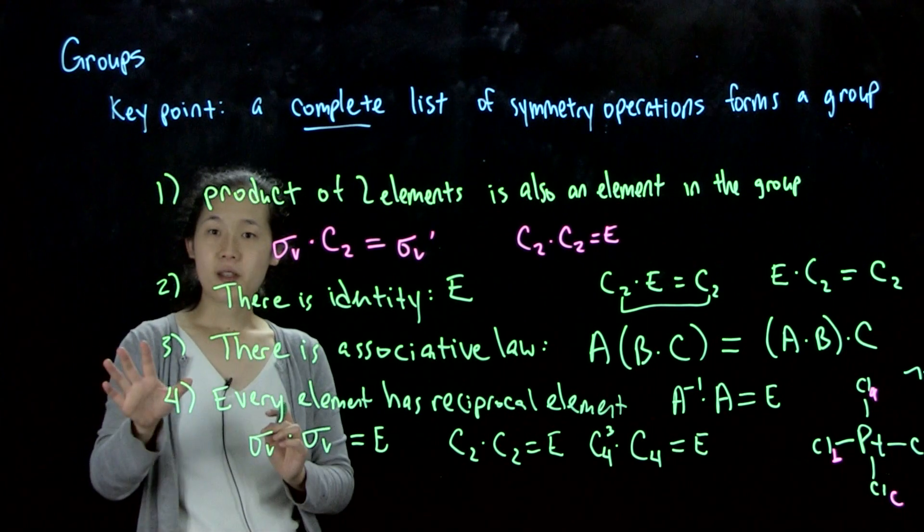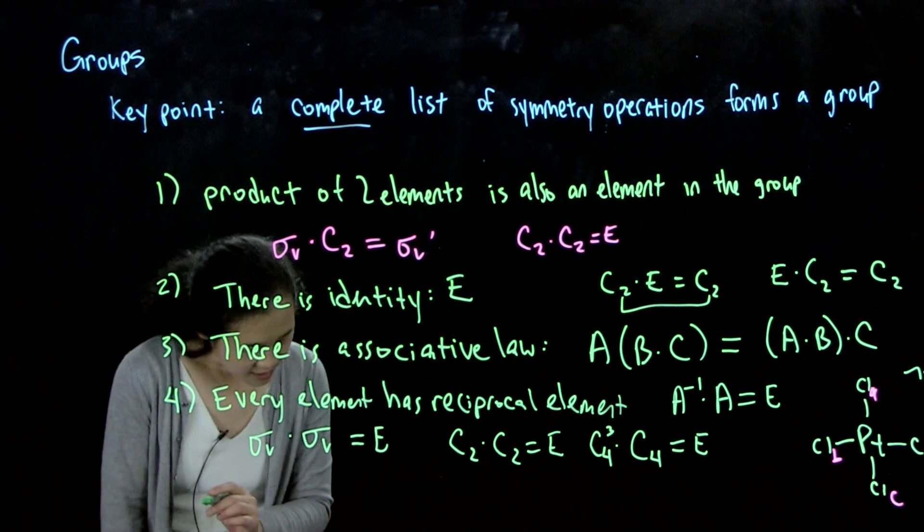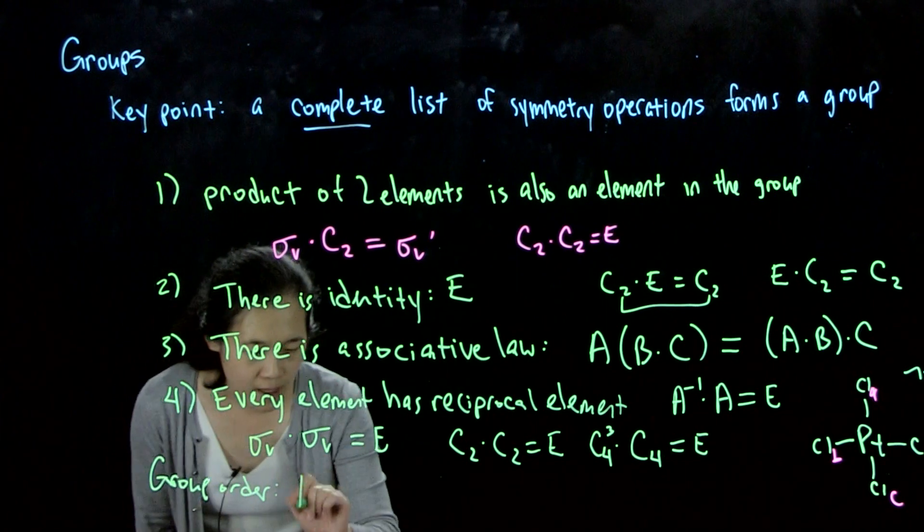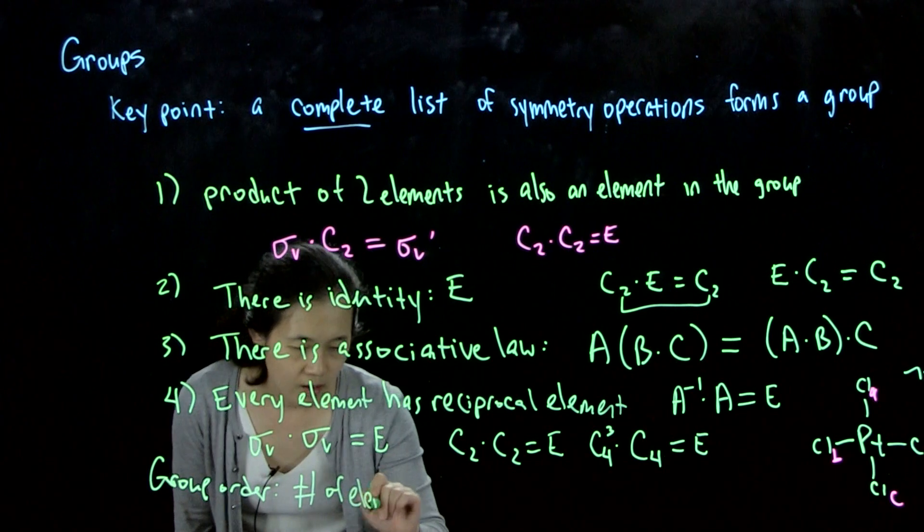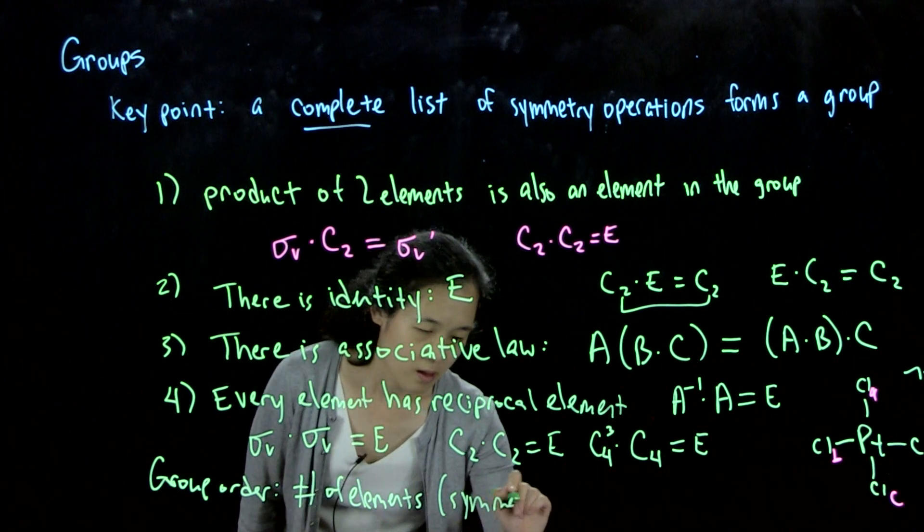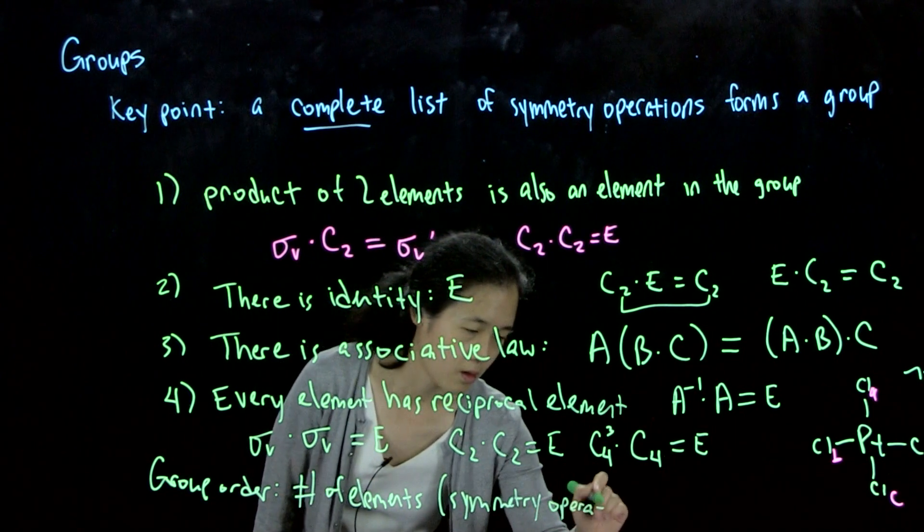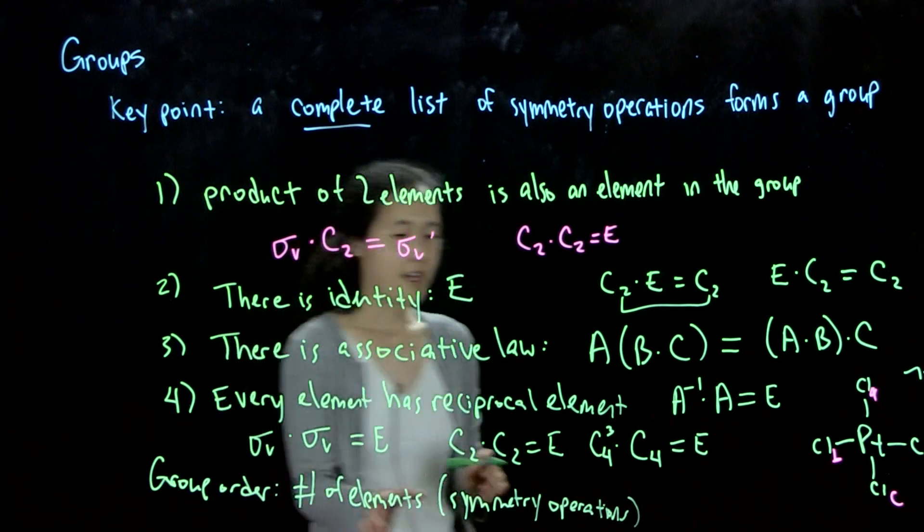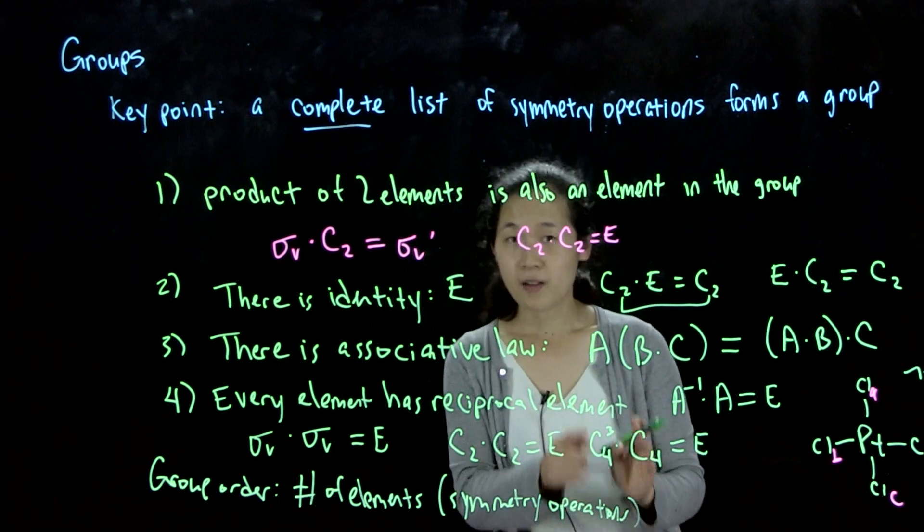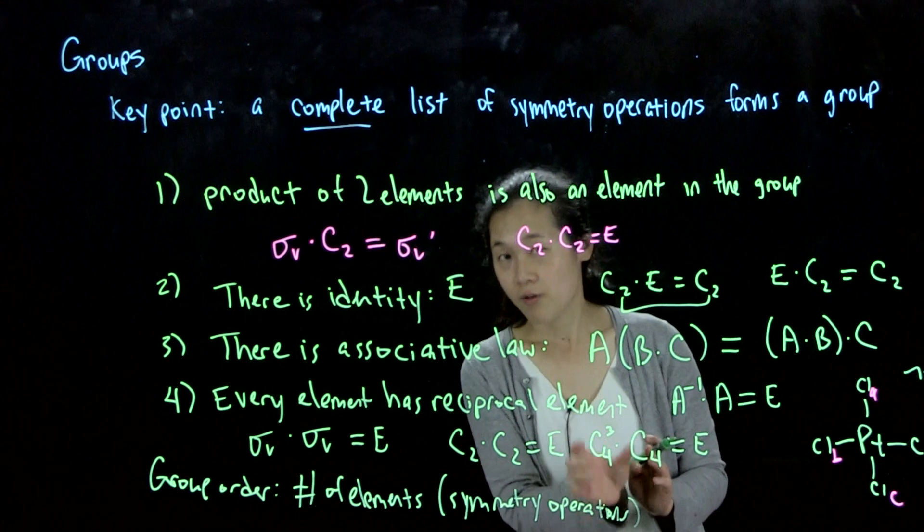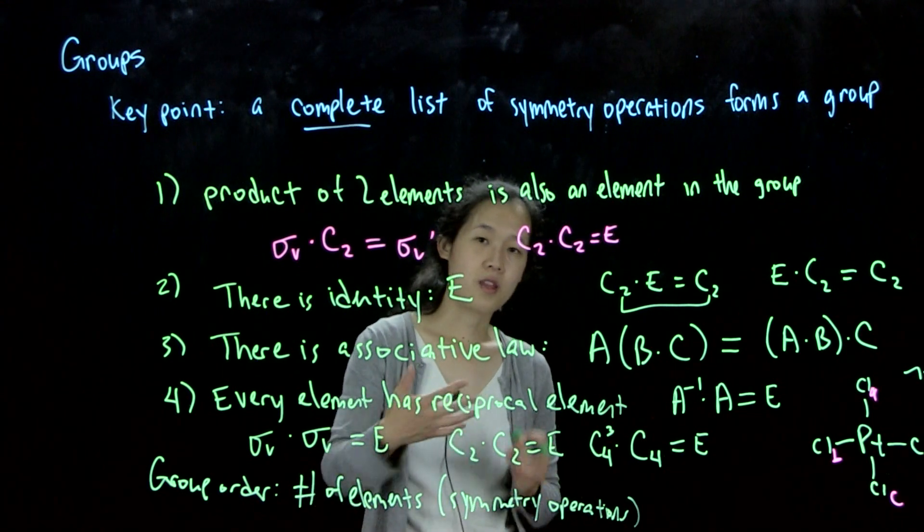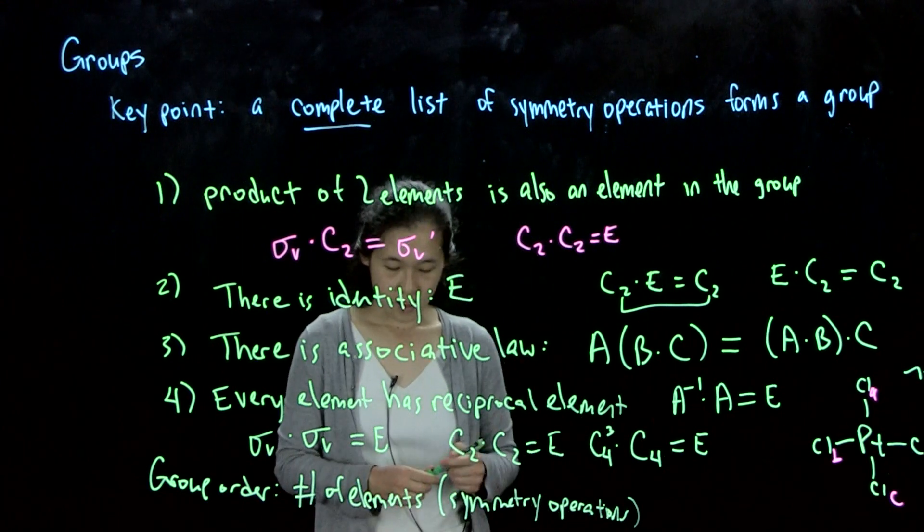Okay, and last points about a group. We have some terminology. So the group order, group order equals the number of elements. And then by elements, I mean symmetry operations for us. I'll note that we have to distinguish between, for example, C4 and C4 cubed are both along the C4 axis, but they count as different operations. So we count these as two different operations. And also, you know, C4 squared would be C2, that's a third operation as well. So these all count within the order.